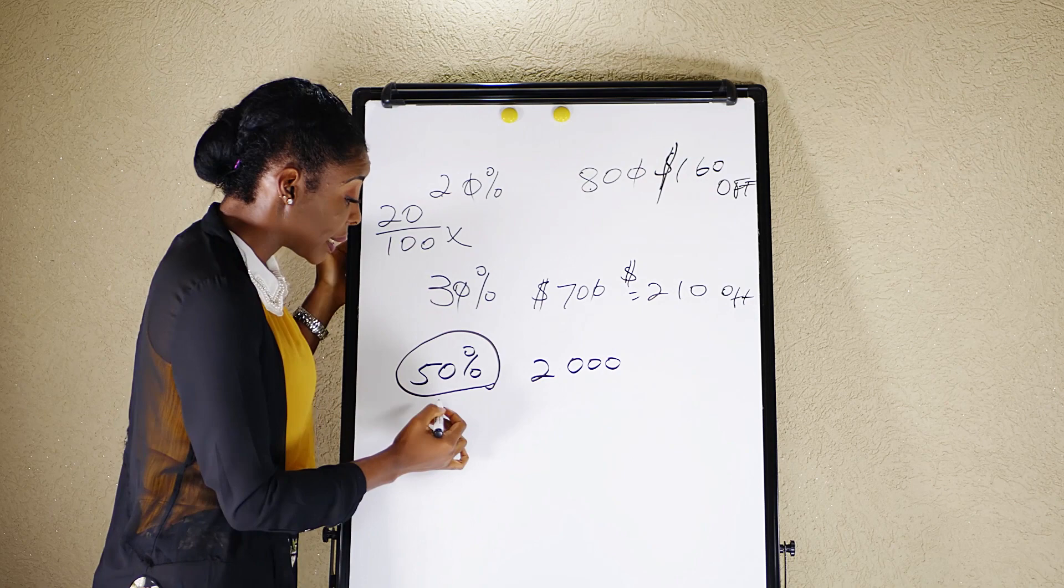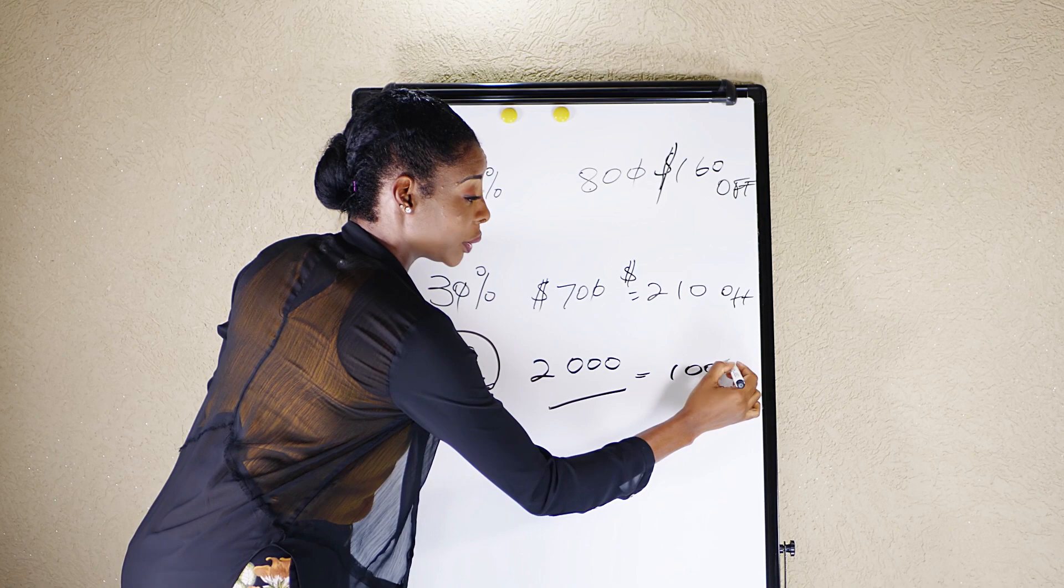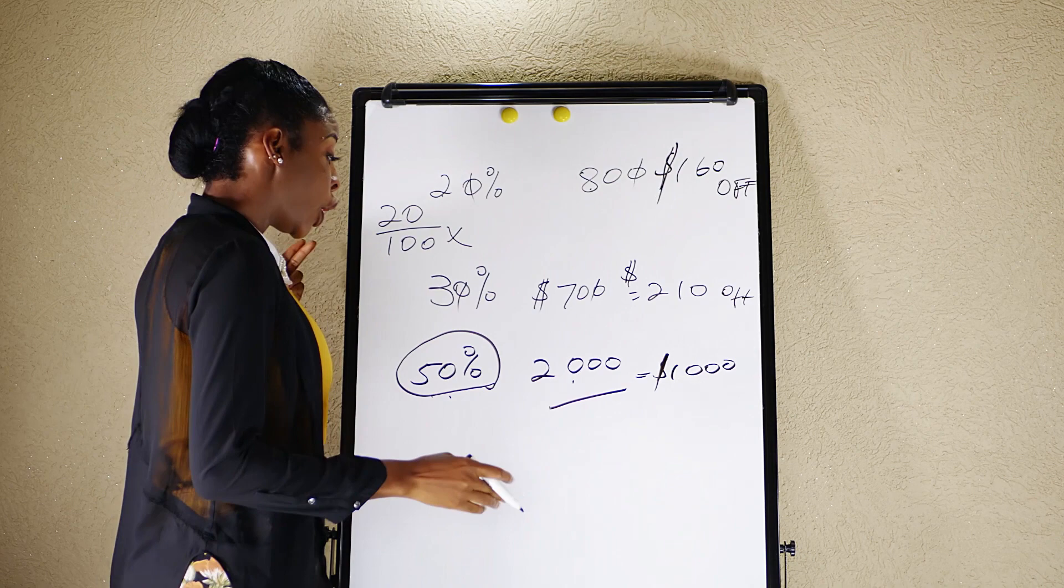Just cut it in half, because it's half of this price. So the discount price will actually be $1,000, which is half of the actual price.